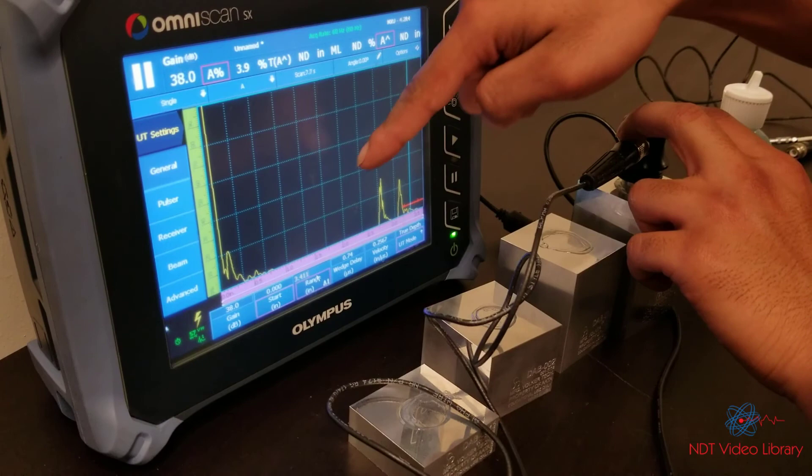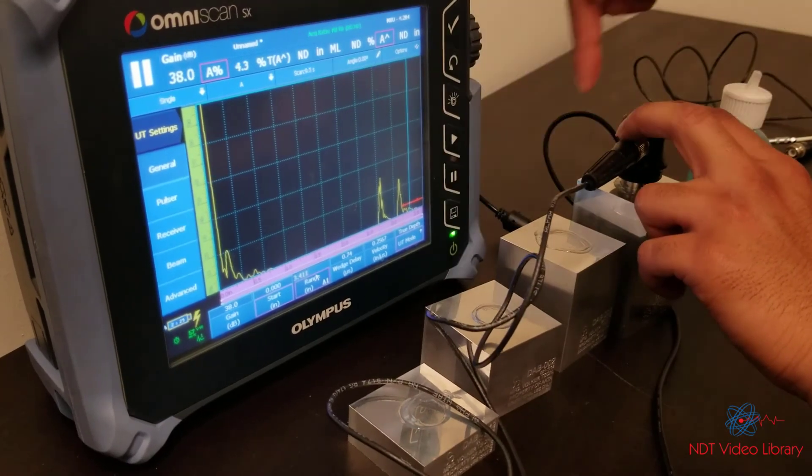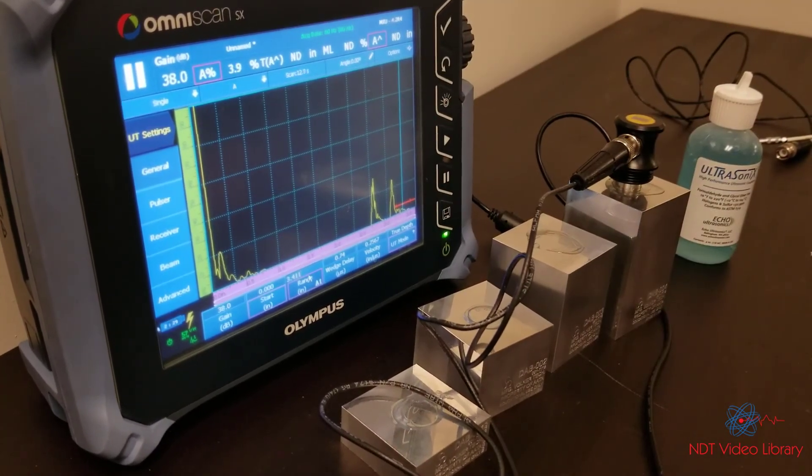So the amplitude goes down as the distance increases. That's distance amplitude blocks.